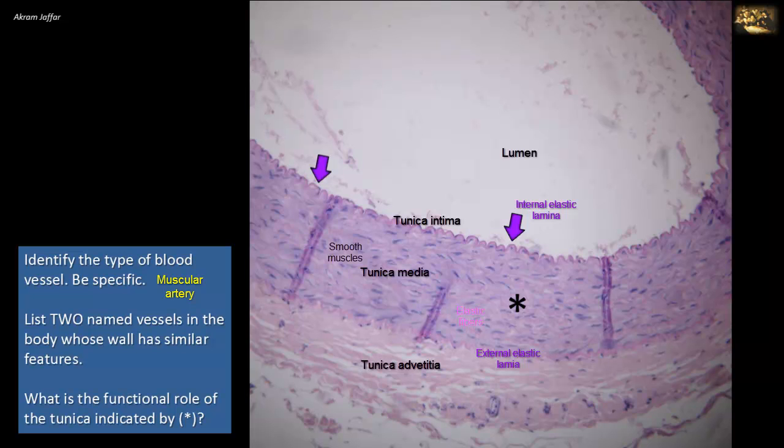For the third part of the question, the functional role of the tunica indicated by the asterisk, which is the tunica media. As we have just mentioned, there are large amounts of smooth muscles in the tunica media, and these smooth muscles help control the size of the lumen and hence regulate the distribution of blood flow to various organs. That's why these arteries, these muscular arteries, are also called distributing arteries.